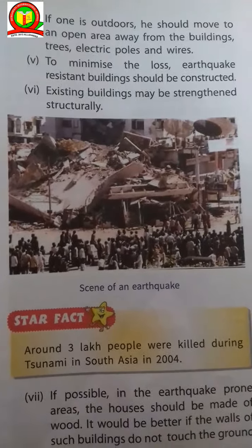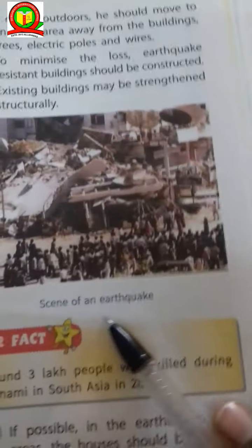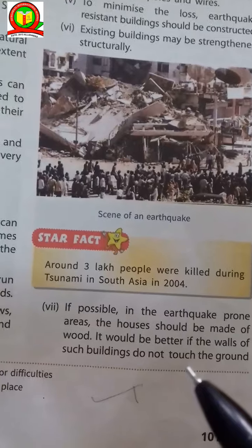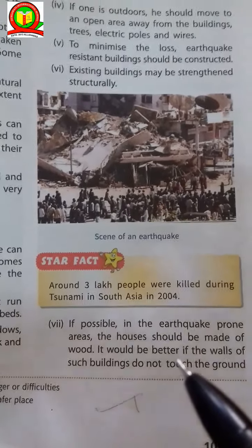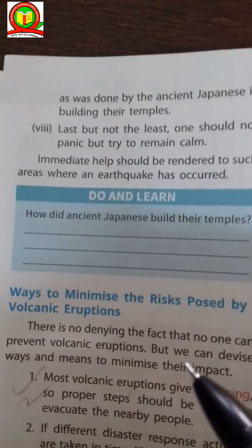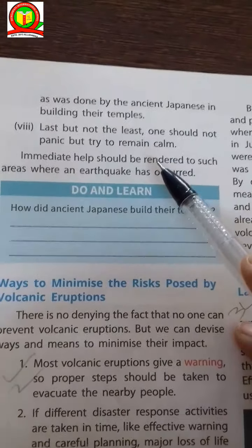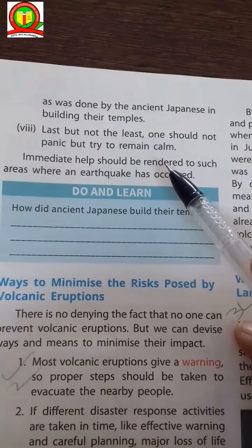Existing buildings may be strengthened structurally. Look at this scene — it is a scene of an earthquake. If possible, in earthquake-prone areas, the houses should be made of wood. It would be better if the fall of such buildings does not touch the ground, as was done by the ancient Japanese in building their temples. Last but not least, one should not panic but try to remain calm.